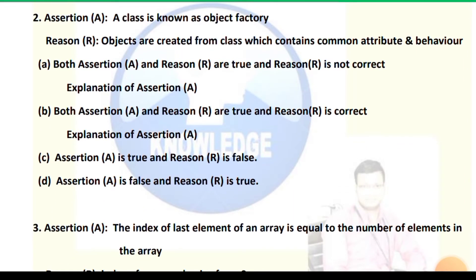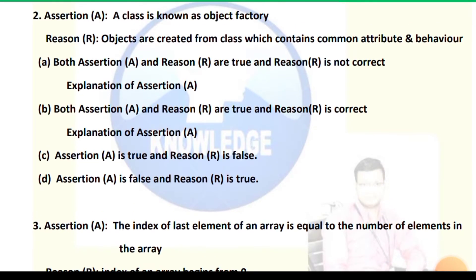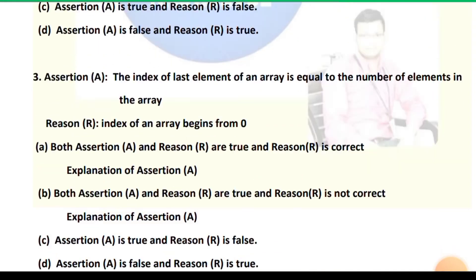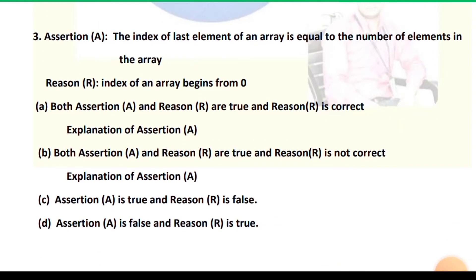Question 2 — Assertion: A class is known as an object factory. Reason: Objects are created from a class which contains common attributes and behavior. The correct answer is option B: both assertion and reason are true, and the reason is the correct explanation, because objects are created through the class only.